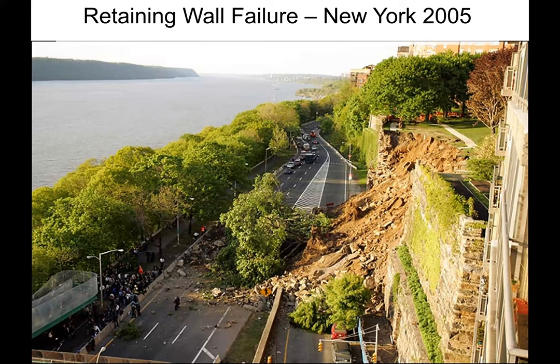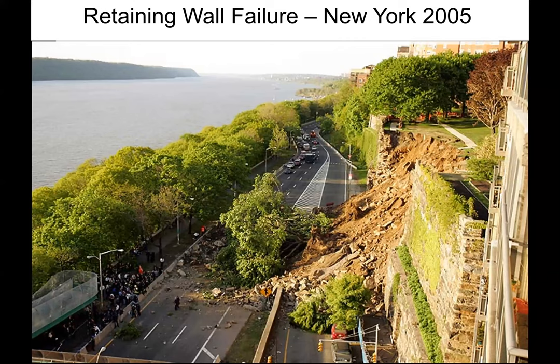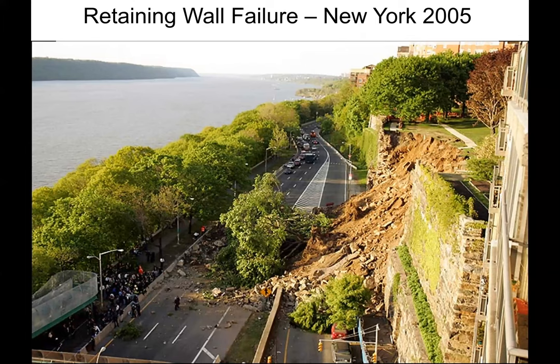Closer to home, here's a retaining wall failure in New York. This property was built in the early 1900s — they wanted a yard in New York City and did something extravagant: built a 40-foot retaining wall. They did have a yard, but not for long. There was a particularly wet and rainy season, the wall failed, and material flooded out onto the highway. Fortunately, no one was injured or killed, but it's a very interesting case history to learn from.